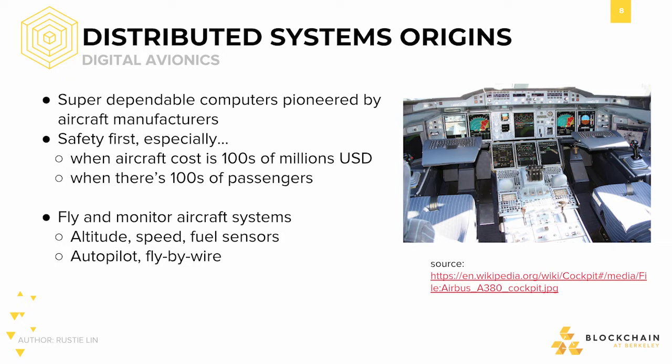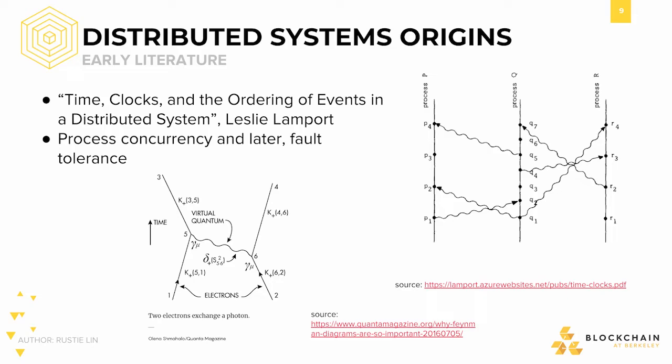They realized that the problem they were solving could be solved by introducing redundancy in their system. Instead of using a single computer onboard their aircraft — thus having a single point of failure — they used multiple computers onboard to distribute the points of failure. How these computers coordinated amongst each other, though, was another challenge. Early literature had focused on enabling coordination of processes, where these processes could be processes on a CPU or computers in a network, separated spatially.